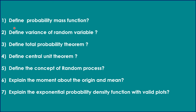Now for short answer questions from Unit 1 and Unit 2 on probability, random variables, and single random variables: define probability mass function, define variance of a random variable, define total probability theorem, define central limit theorem, define the concept of random process, explain moments about the origin and the mean, and explain the exponential probability density function with valid plots. These seven questions are very important for examinations, given by Ravi Kumar sir, PTSP faculty.